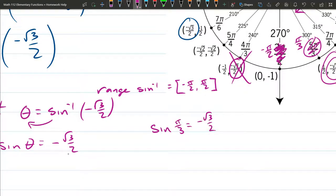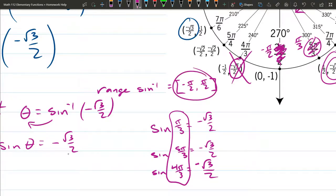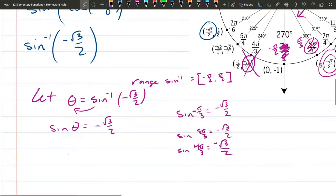You could also write down sine of 5π over 3 equals negative square root 3 over 2, or sine of 4π over 3 also equals negative square root 3 over 2. However, only one of these angles is where it needs to be, and that is negative π over 3. So that is our θ.